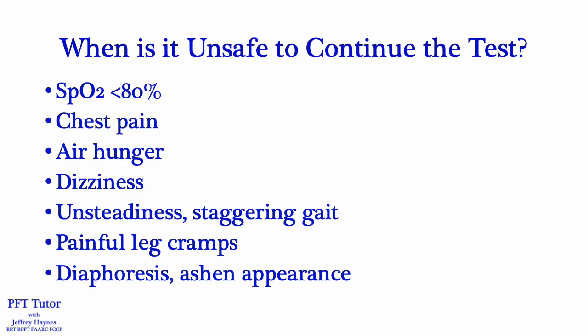Once the test has started, it's important to recognize conditions which make it unsafe to continue: SpO2 less than 80% — many people are surprised, thinking they should stop at 90%, but the 6-minute walk test has been shown to be very safe even in the 80s. Other stopping criteria include chest pain, air hunger, dizziness, an unsteady or staggering gait, severe claudication with leg cramps, diaphoresis, or an ashen appearance — in those cases, have the patient use a chair and sit down.